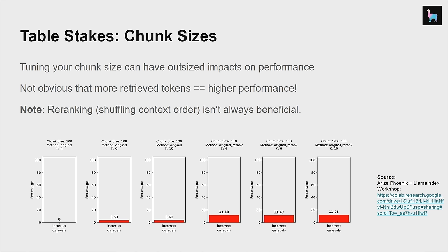Let's talk about chunk sizes first. Tuning your chunk size can have outsized impacts on performance. What's interesting is that more retrieved tokens do not always equate to higher performance, and re-ranking your retrieved tokens doesn't necessarily mean your final generation response is going to be better.